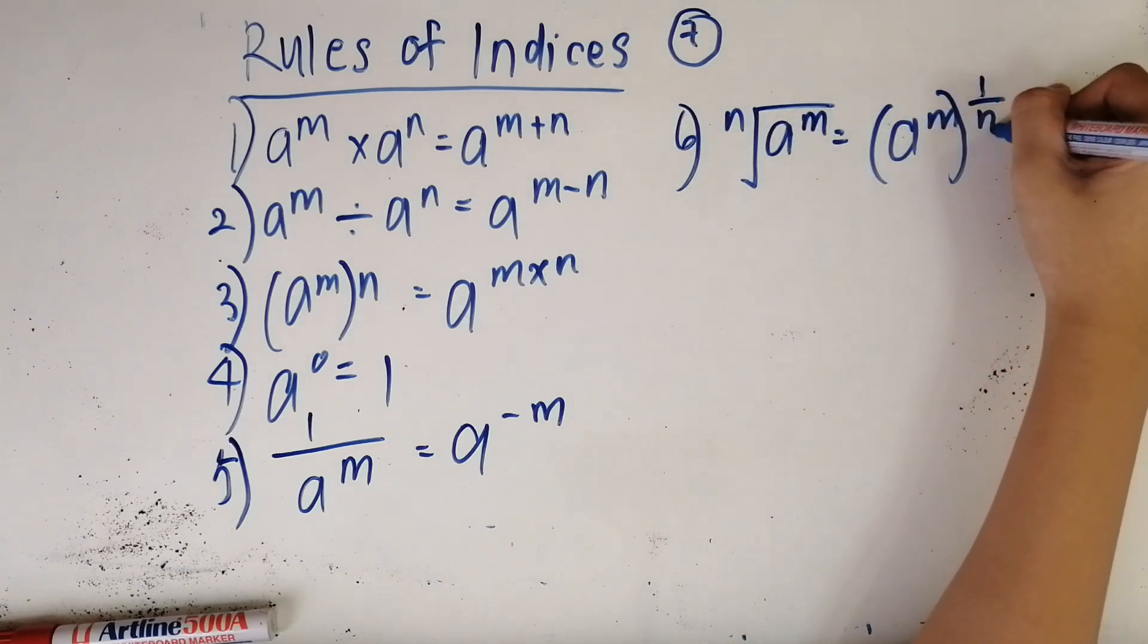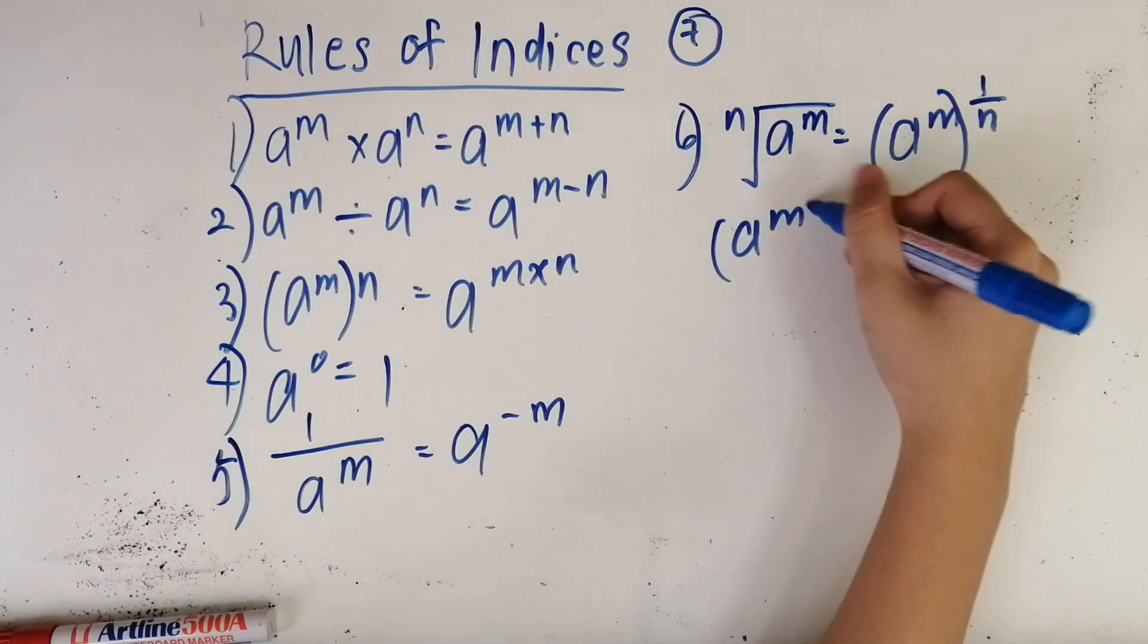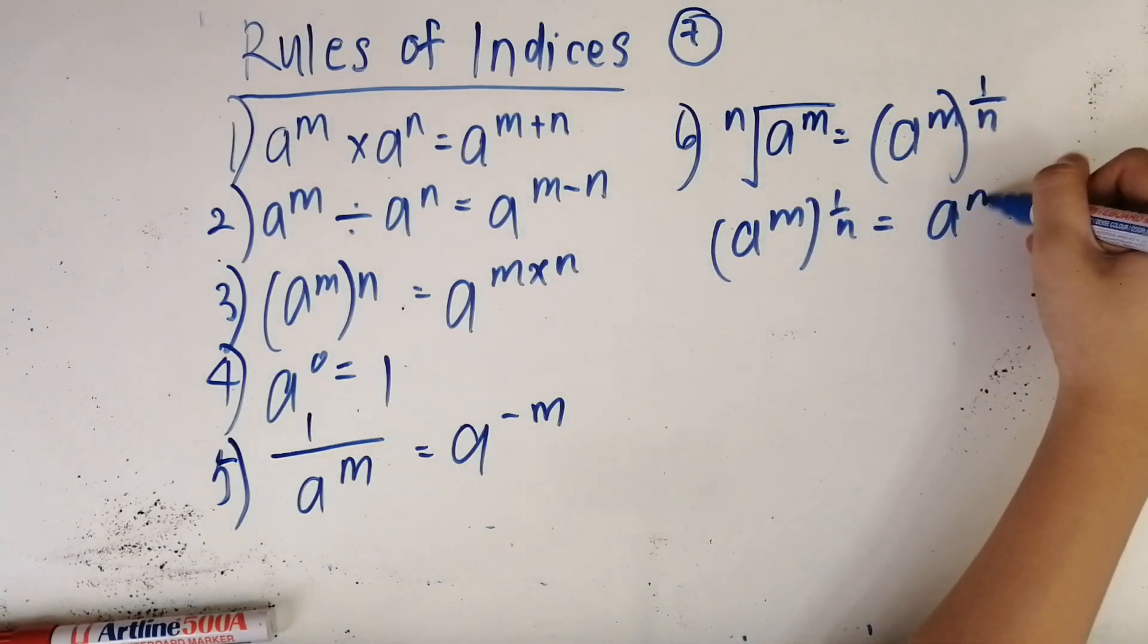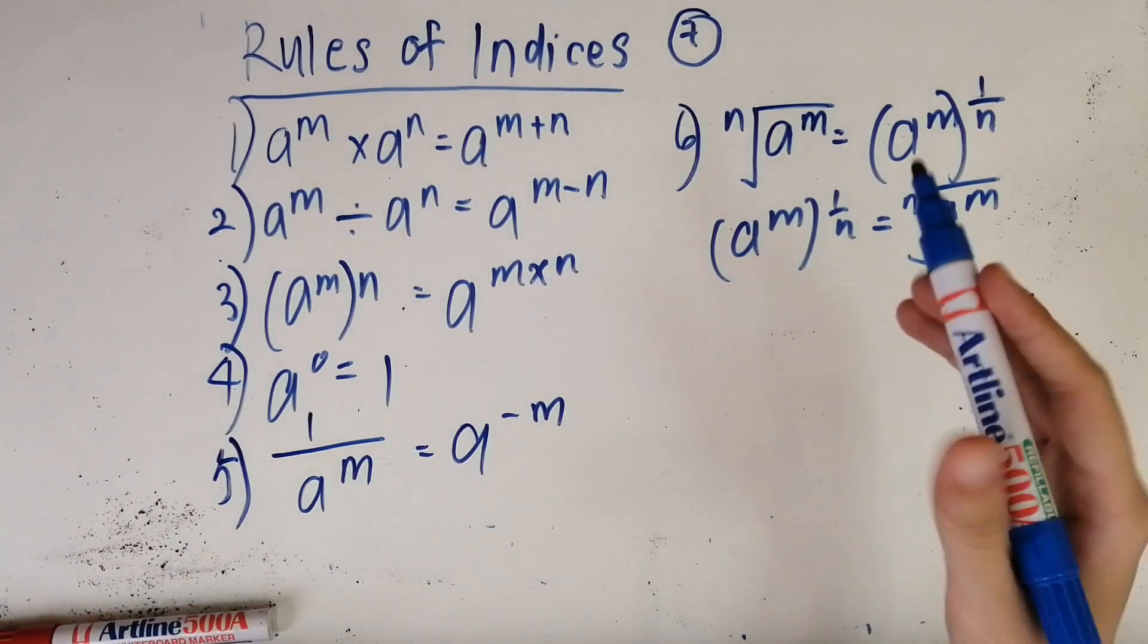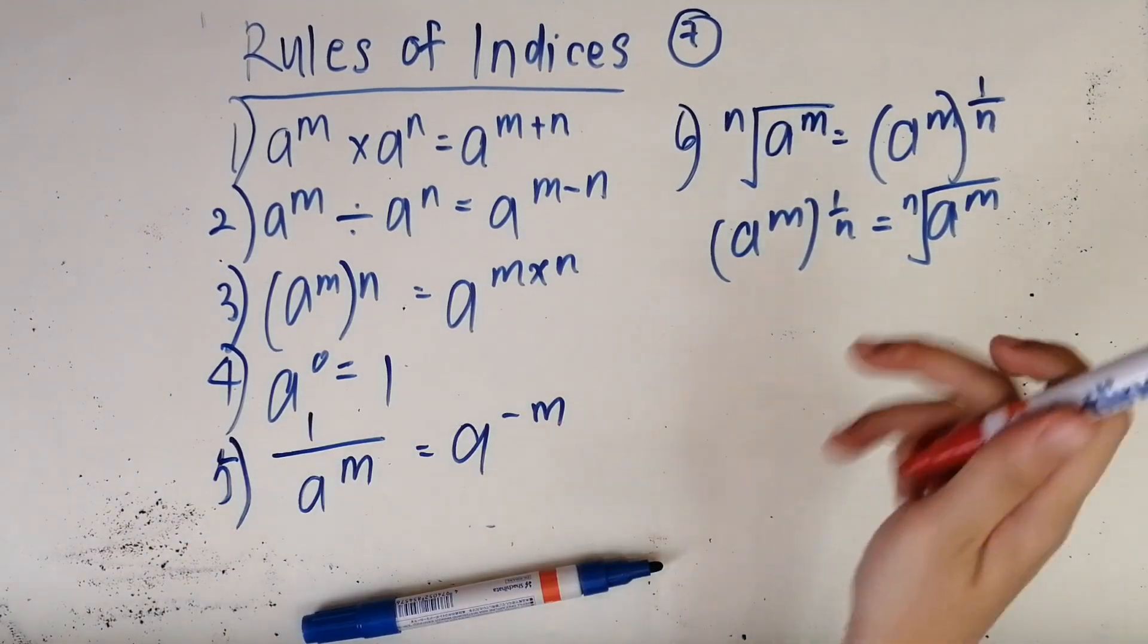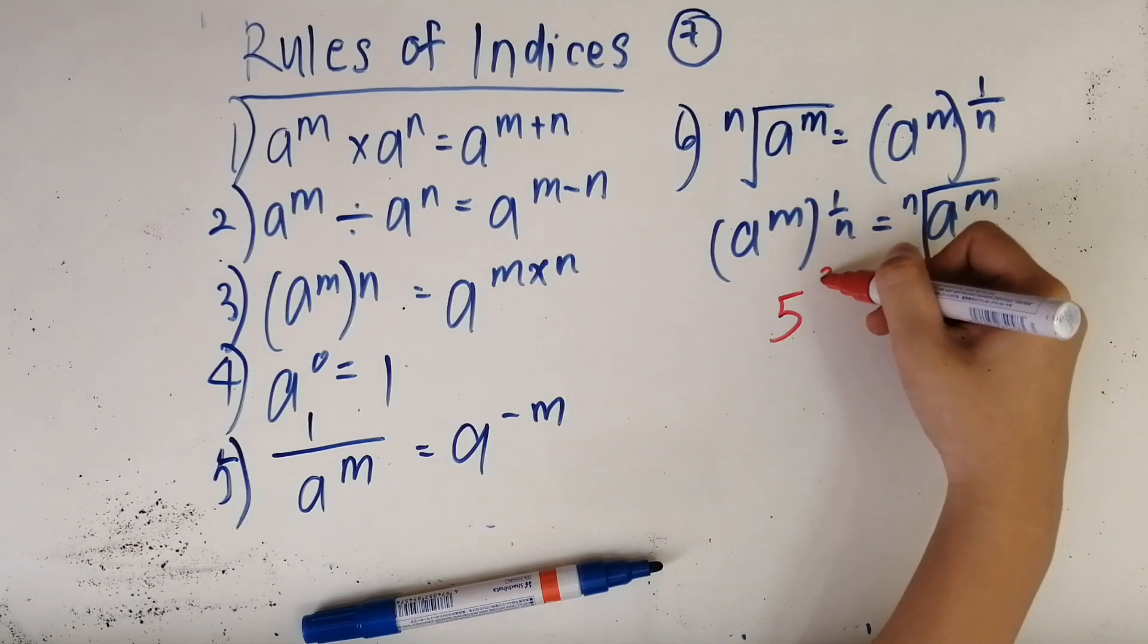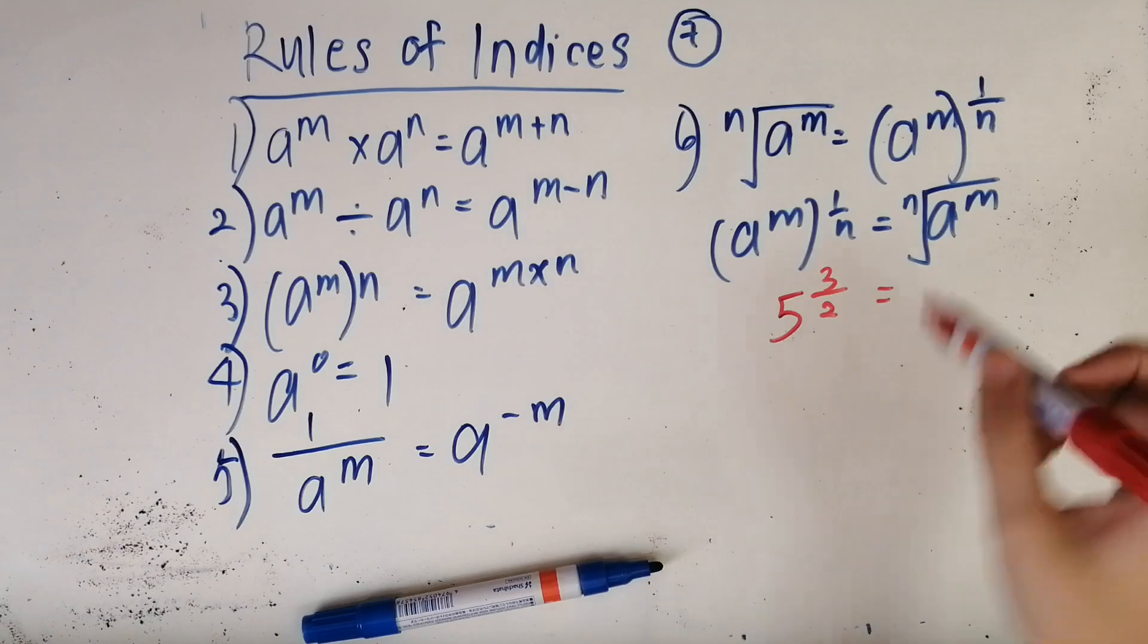So the same goes if you want to change a^(m/n) to the nth root of a^m. Let's say you have a number, I'll just... it's super random, okay. 5 and 3 over 2, let's say, and you have to convert this to square root. How do you know how to convert this to square root?